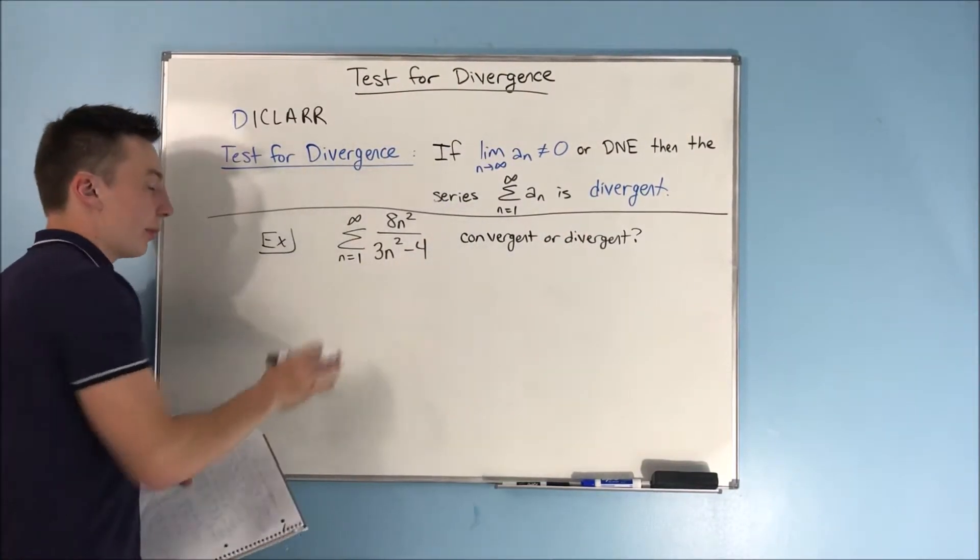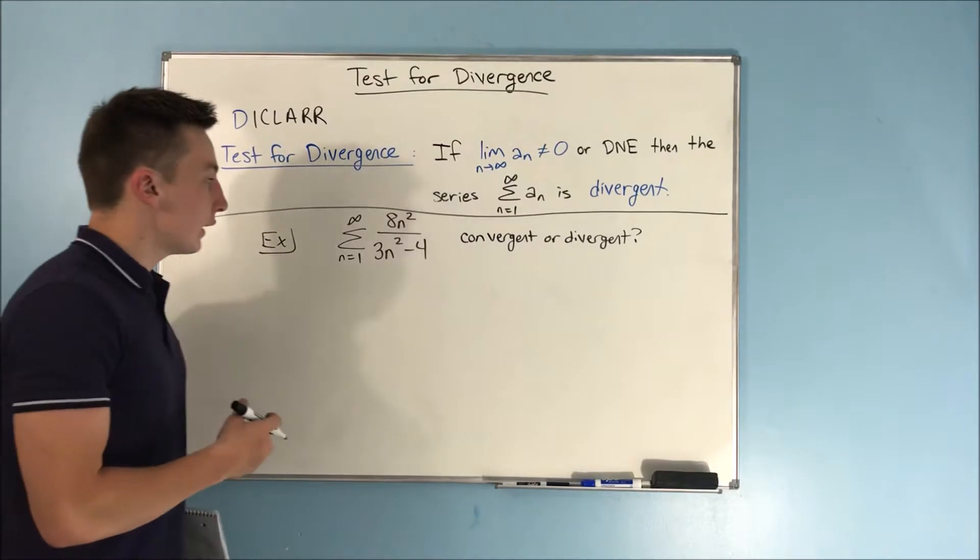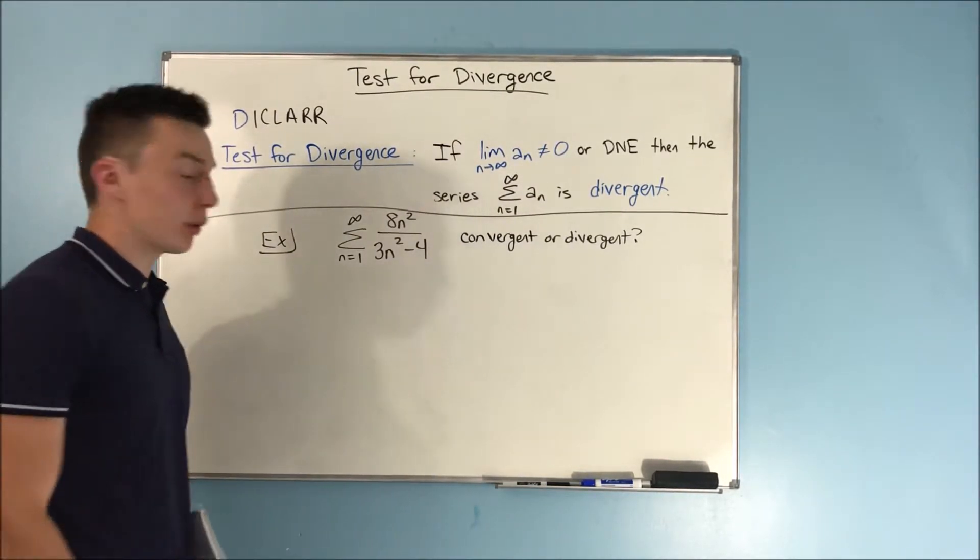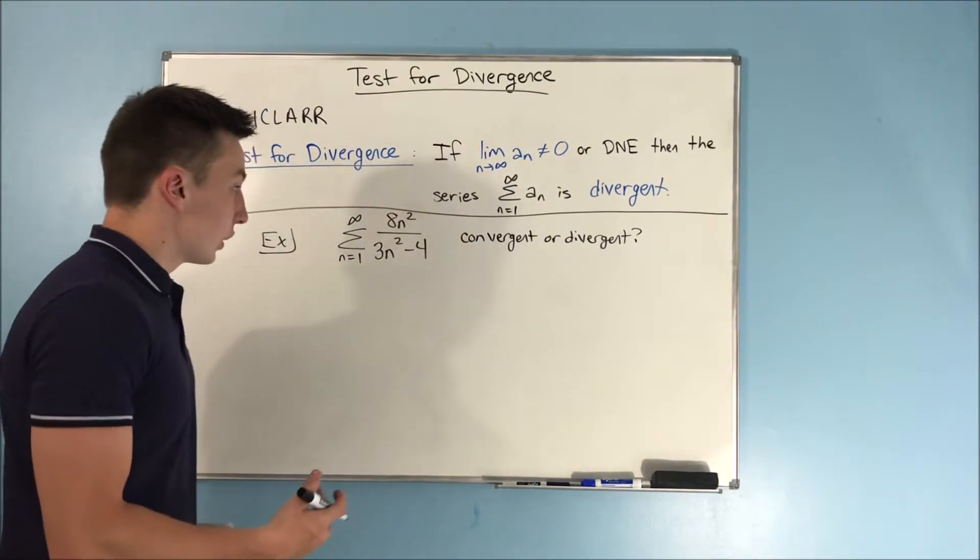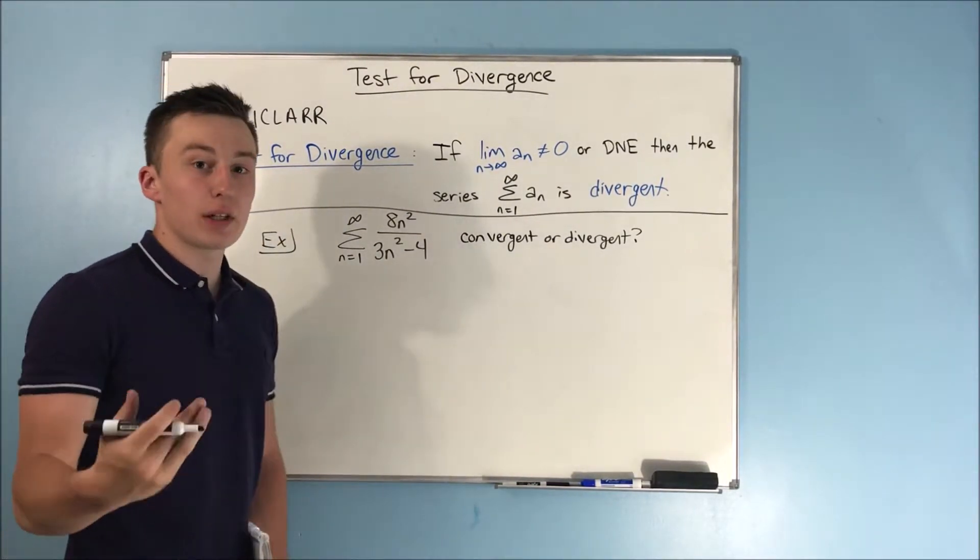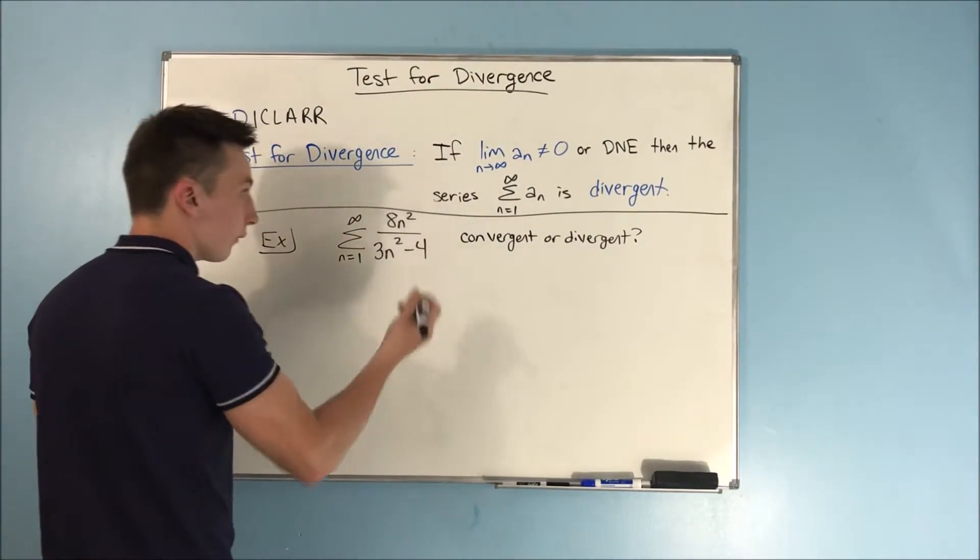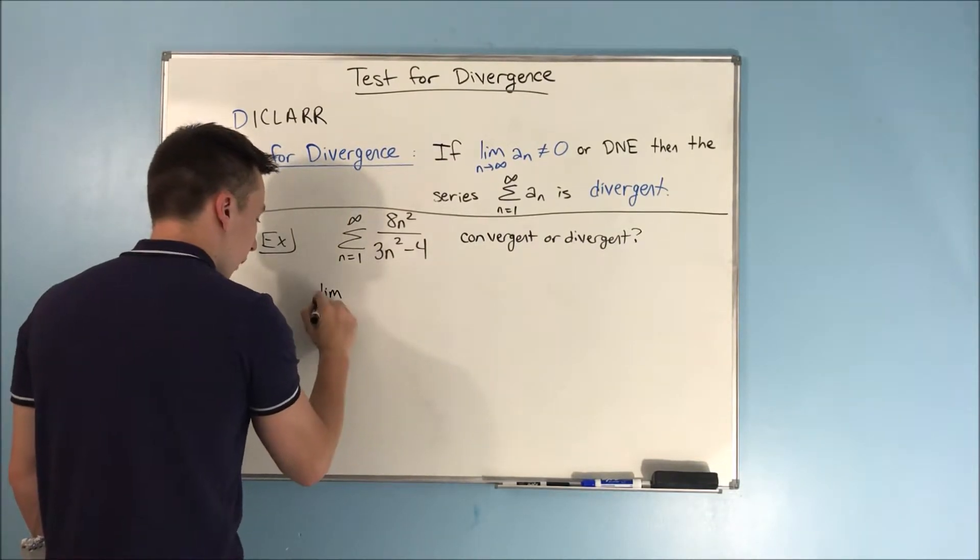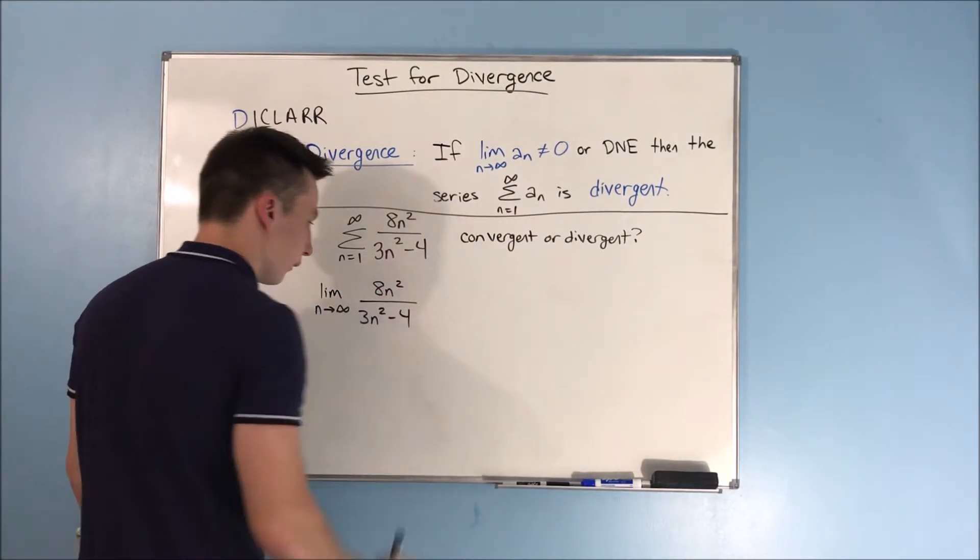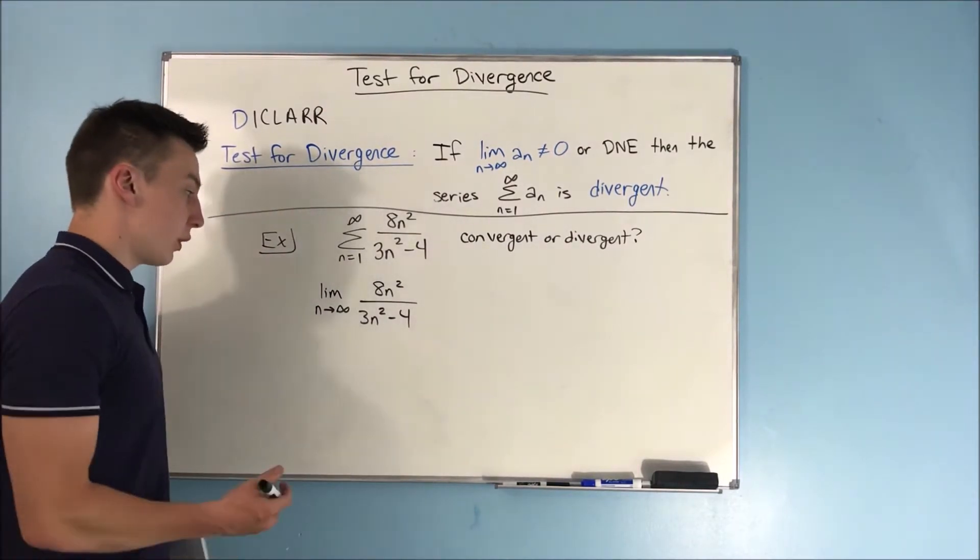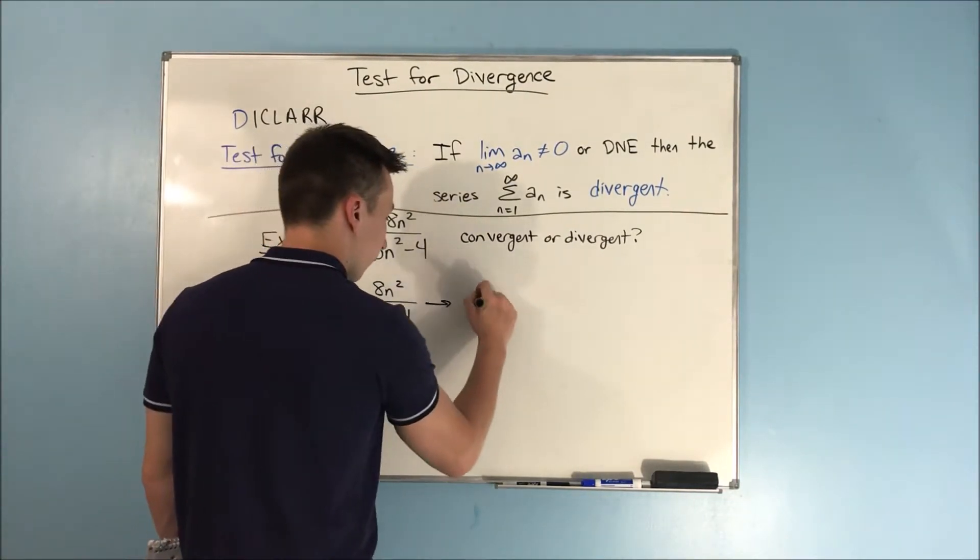So we have an example up on the board here that I wanted to go over quick. Now, we have the series, the sum from n equals one to infinity of 8n squared over 3n squared minus four. And we want to see if this is convergent or divergent. Now, this isn't a p series. This isn't a geometric series. So we got to start using our tests, and we're going to start with D, which is the test for divergence. Now, we can take that limit as n approaches infinity of 8n squared over 3n squared minus four. And from here, you can use L'Hopital if you'd like, or you can just divide every term by n squared. I will divide every term by n squared.